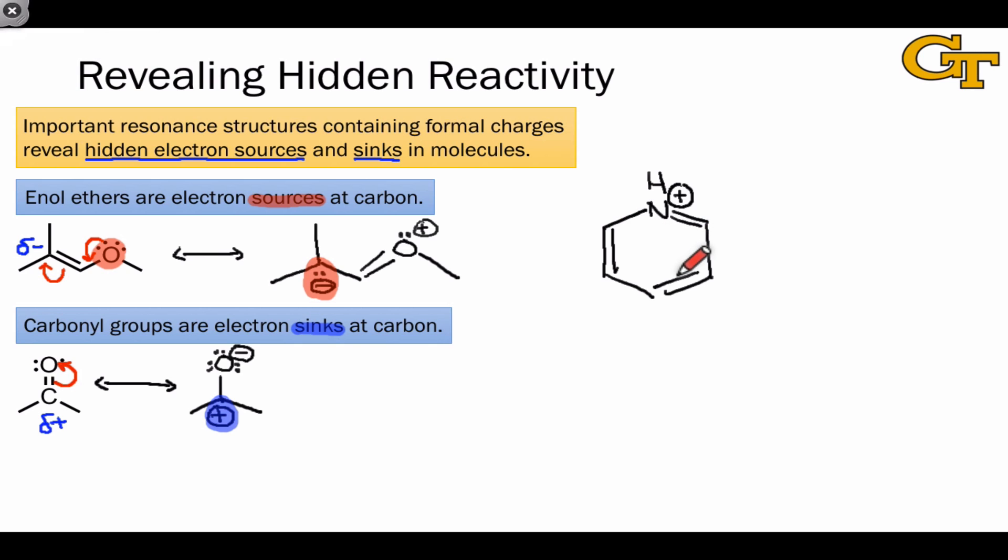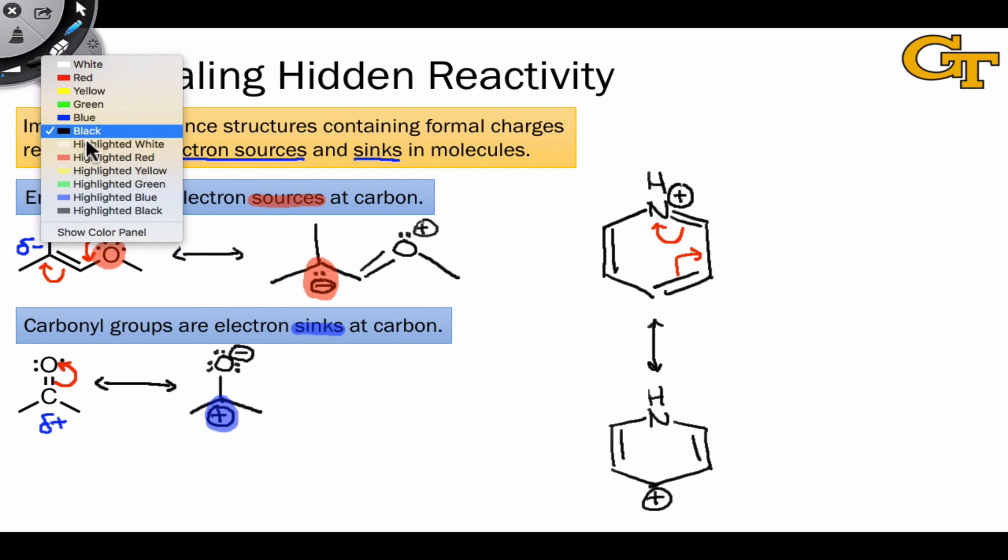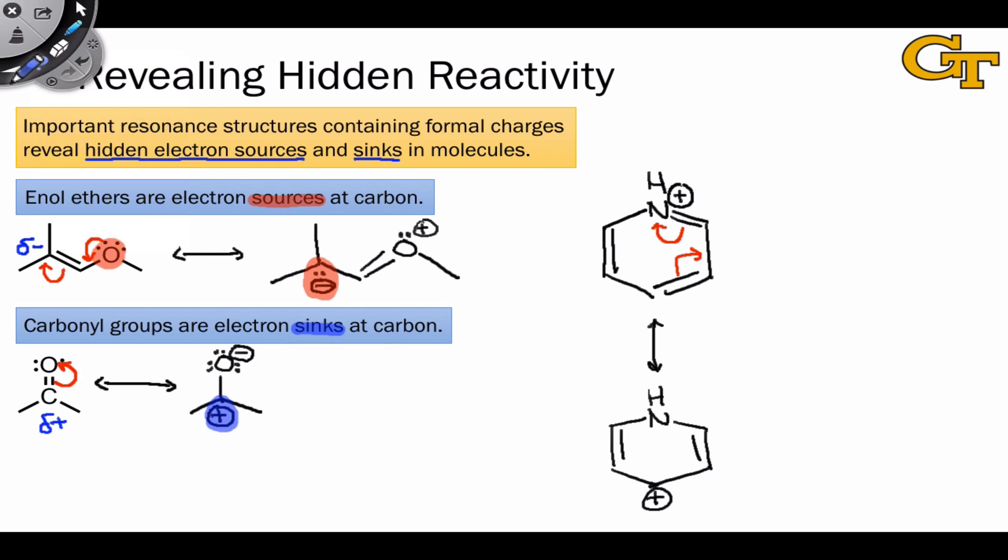If, for example, we do pi to pi star electron flow within the ring, we arrive at a resonance structure that has formal positive charge on one of the carbon atoms within the ring, revealing that nitrogen is not the only electron sink in this molecule, and that carbon too can serve as an electron sink.